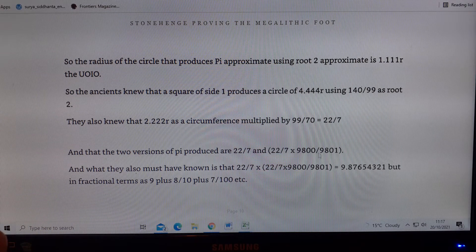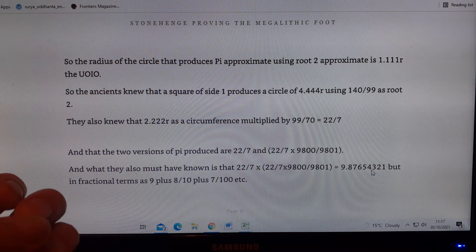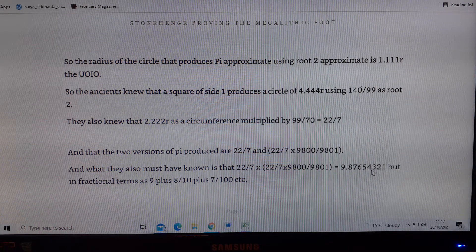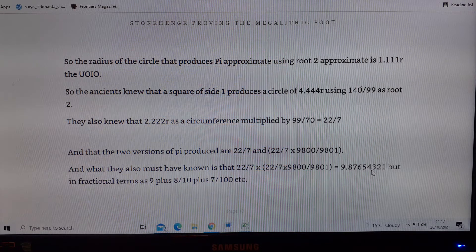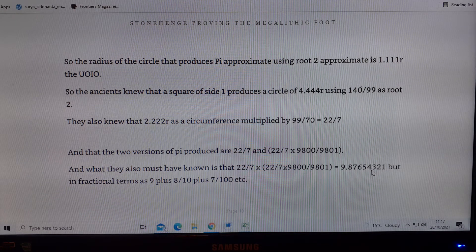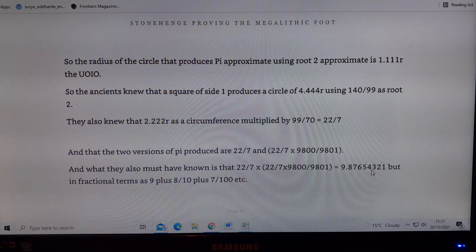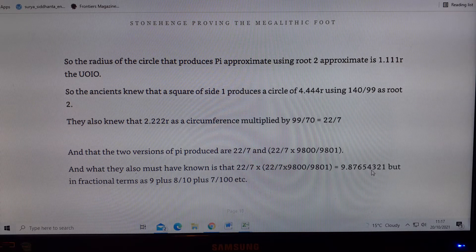If we take the square root of that and divide it by root 2, we get these numbers that are 4.444 exactly recurring and 2.222 recurring. This is what they knew, and this is what Berryman tells us they knew.